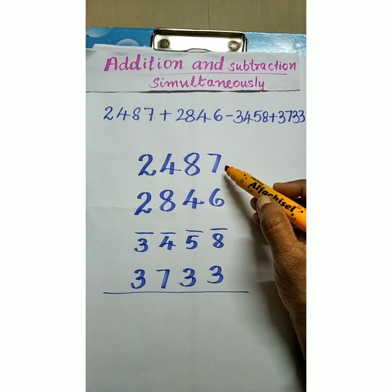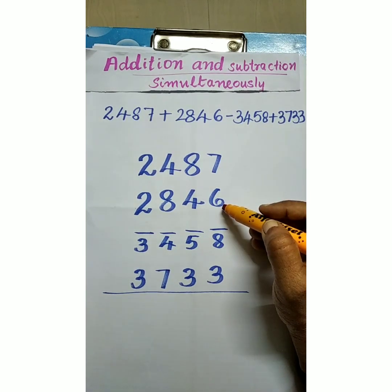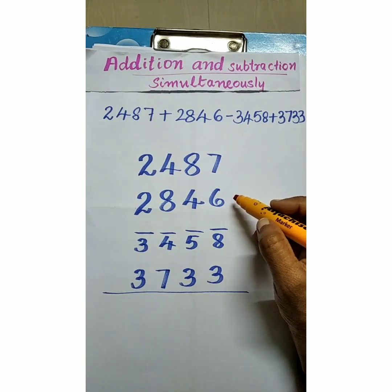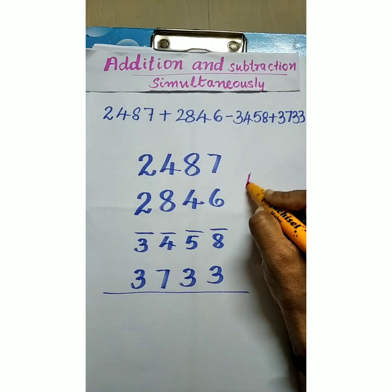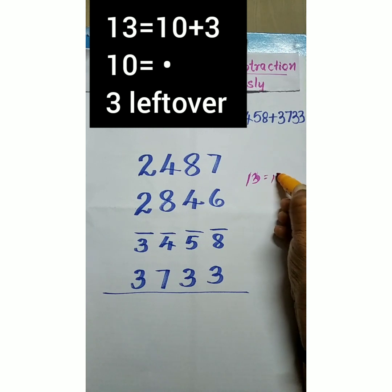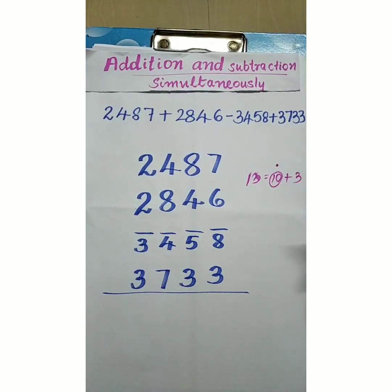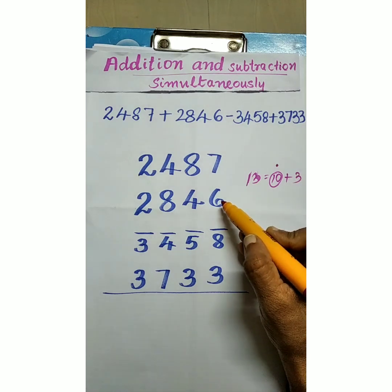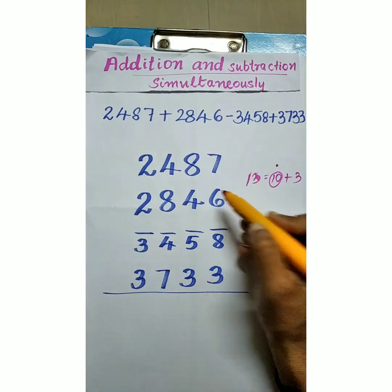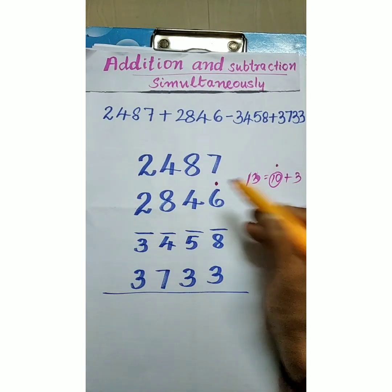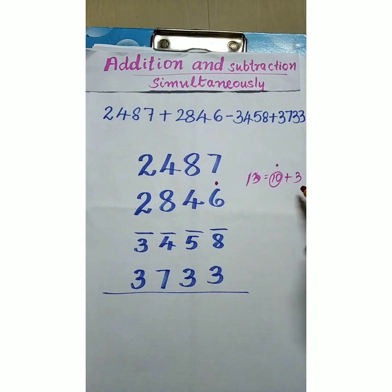Now 7 plus 6 is 13. 13 is more than 10. So in this method 13 is equal to 10 plus 3. For this 10 we are using one shoot. That shoot or dot we are marking on the last digit top, like this. Now leftover number is 3.